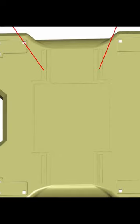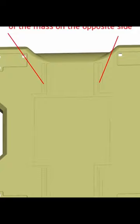Sink marks most commonly occur on a surface that has ribs, bosses, and other voluminous features on the rear side of the molding. All plastics shrink as they freeze off, some more than others.